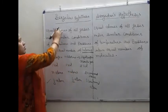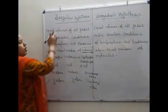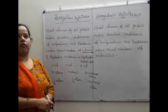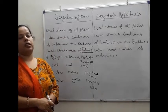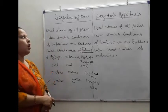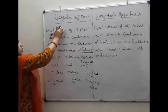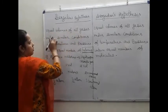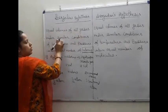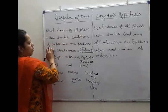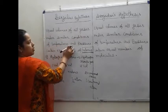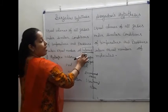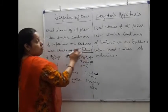Bachelier tried to coordinate between Gay-Lussac's Law of Combining Volumes and Dalton's Atomic Theory. According to this hypothesis, equal volumes of all gases under similar conditions of temperature and pressure contain equal number of atoms.